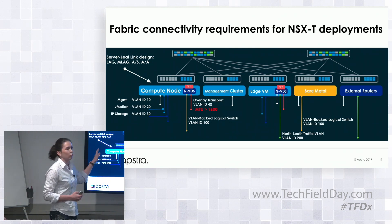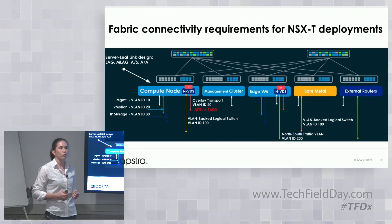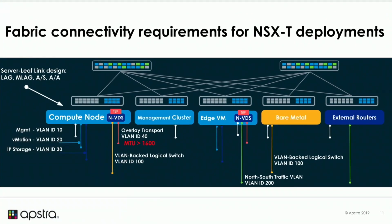First, you have to think about how you want to attach your server to your top-of-rack switch — how many links you want, whether you want those links to be aggregated as a LAG, and whether you want redundancy for your leaf in your top-of-rack switch.